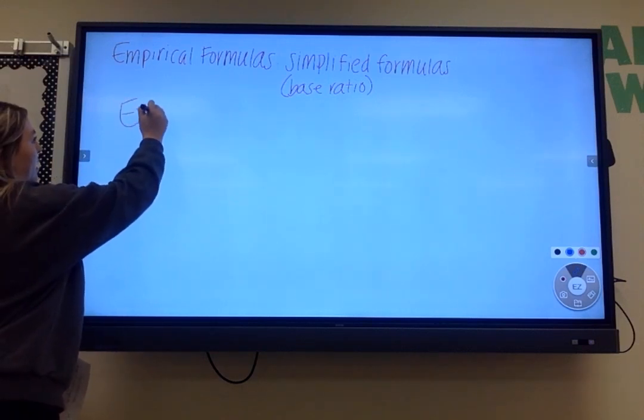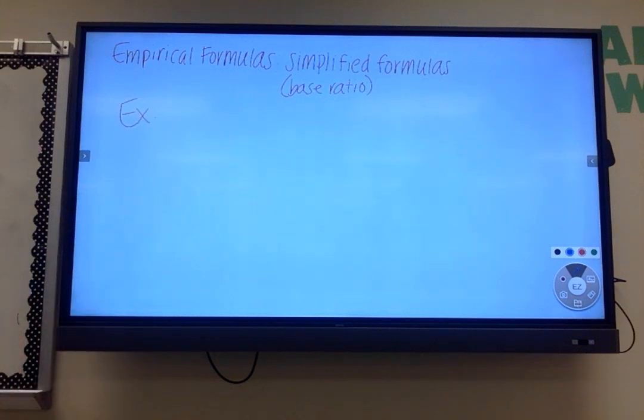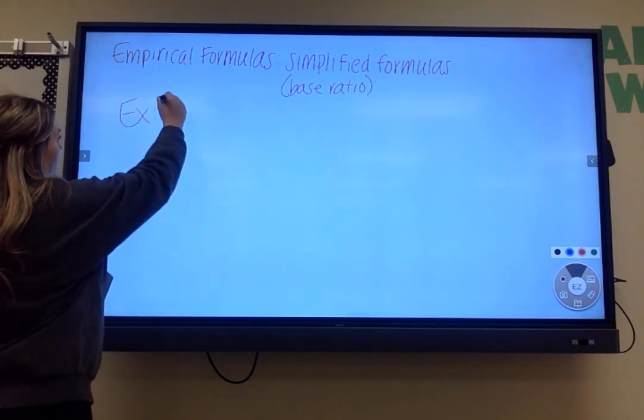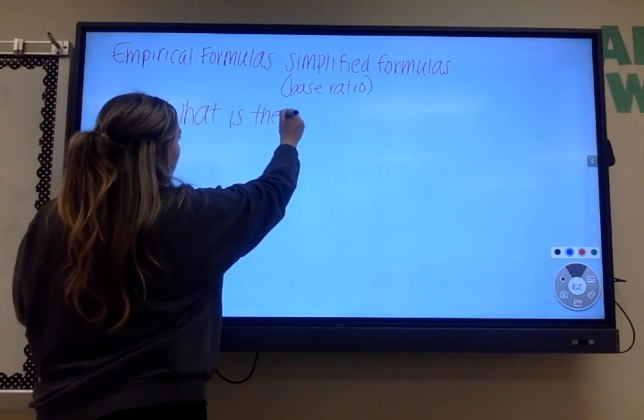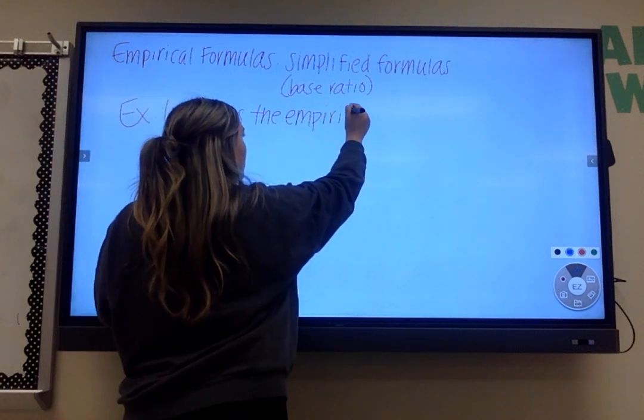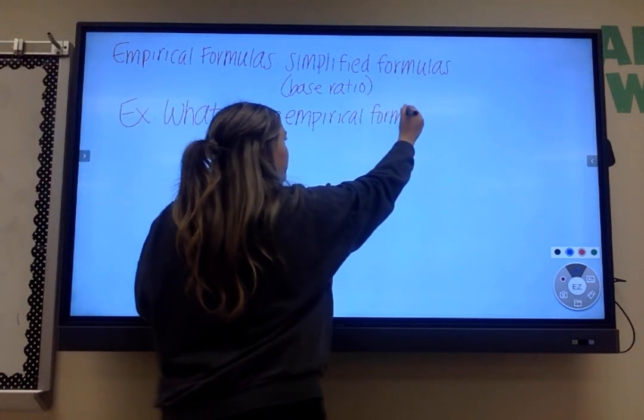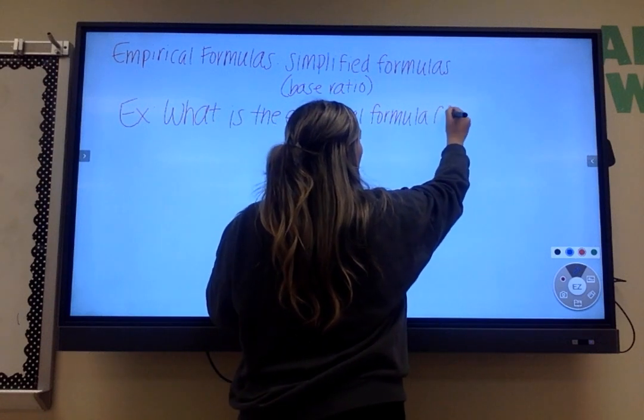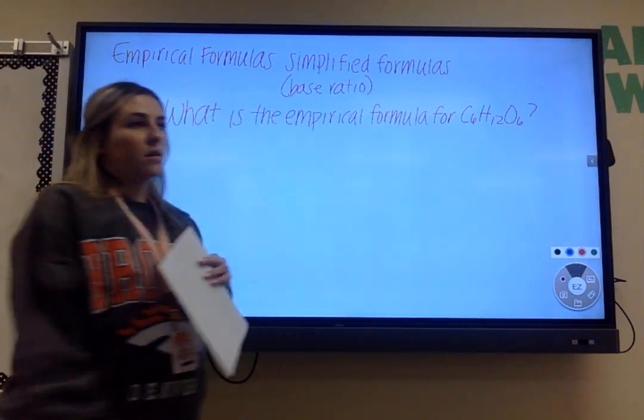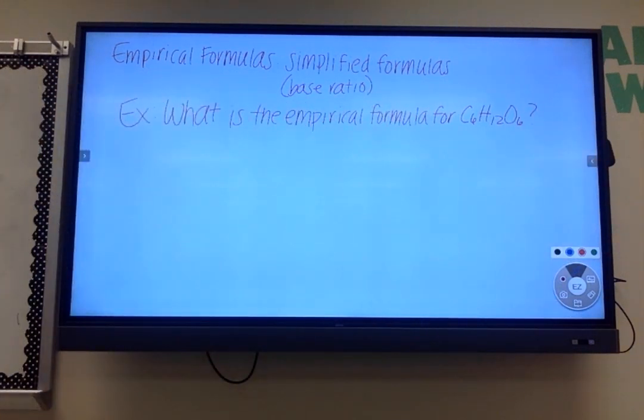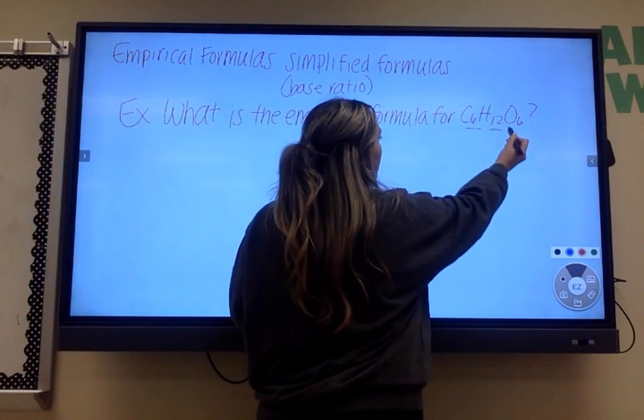Whenever I say base ratio I expect you to know that I'm talking about empirical formulas - simplified versions. We're going to write example problems up on the board. A question might ask you on the quiz or test: what is the empirical formula for glucose which is C6H12O6? When it asks you for the empirical formula you are simplifying what is given to you.